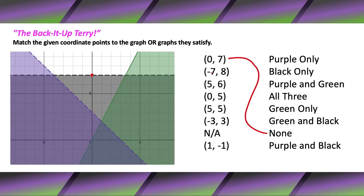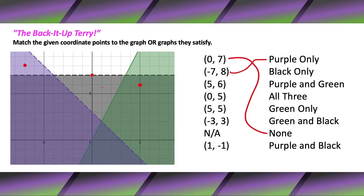Next one: negative seven and eight. One, two, three, four, five, six, seven, eight — that lands in purple only. Got it. Next: five and six, right there. Now that is the green and black region — we have black on this side and green on the other. So five and six matches green and black right there. Zero and five — that's in the black only section.